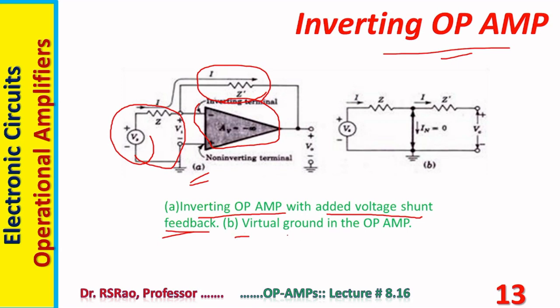Also shown is the concept of virtual ground in the op-amp. What is virtual ground? The op-amp is supposed to exhibit infinite input resistance, meaning an open circuit at the input. So whatever current flows through Z must flow through Z prime — no current enters the op-amp between the inverting and non-inverting terminals. Since the non-inverting terminal is connected to ground and no current flows, this ground point is called virtual ground.